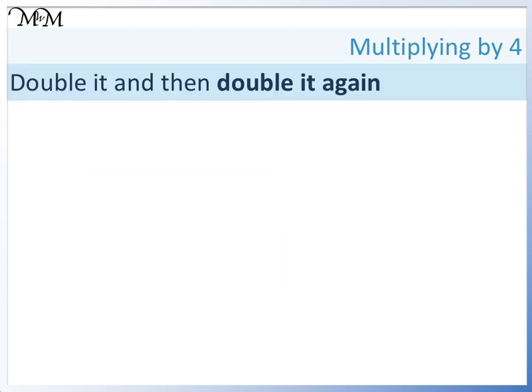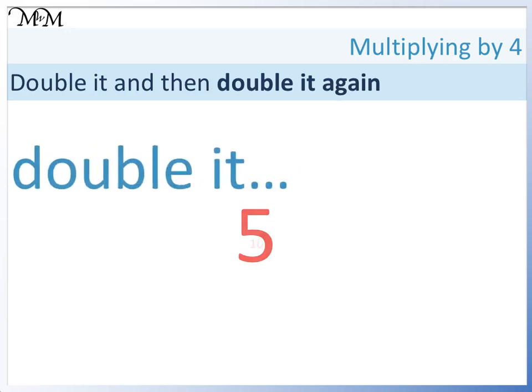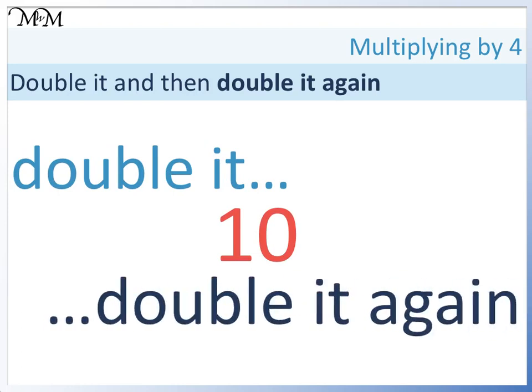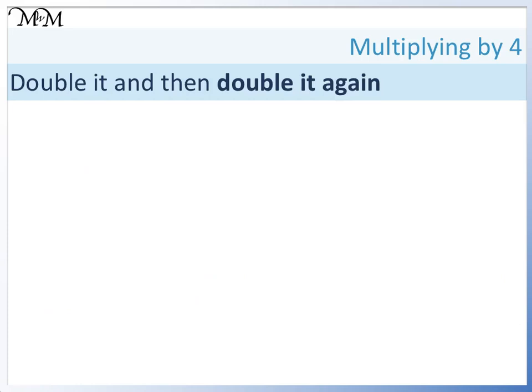Let's try this with a simple example. Say I wanted to multiply 5 by 4. I could double it to give 10 and then double it again, which gives me 20. I already know from my times table knowledge that 5 fours are 20.